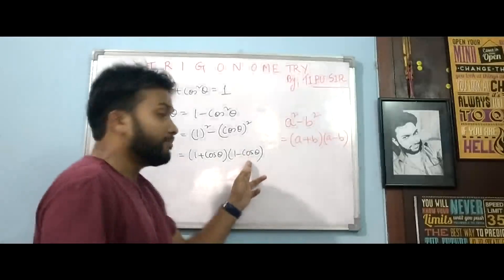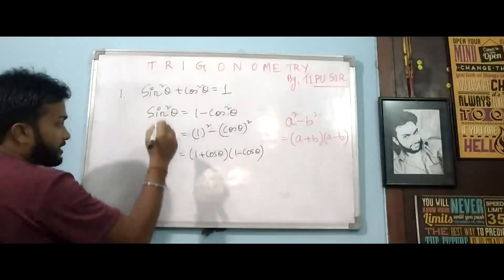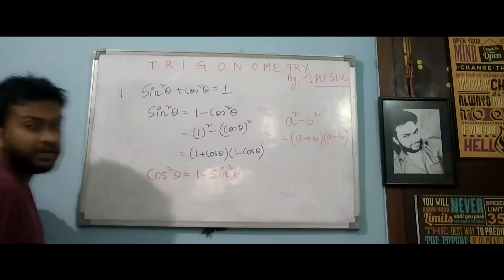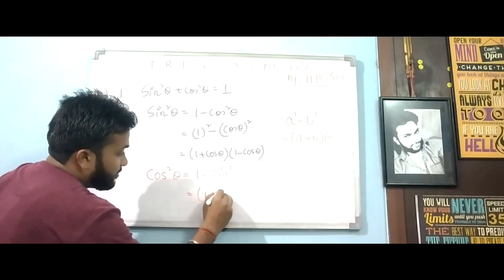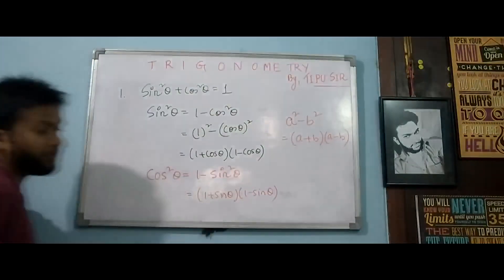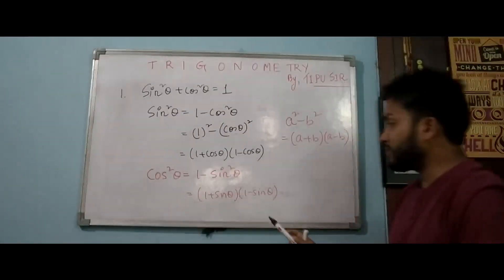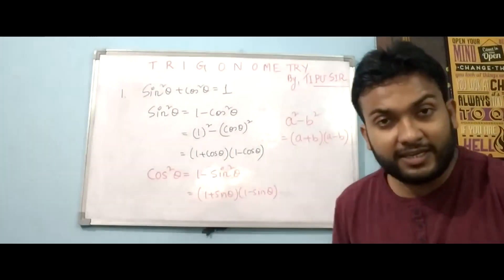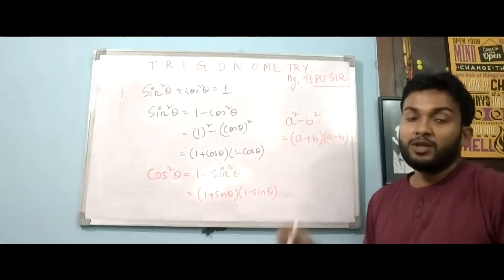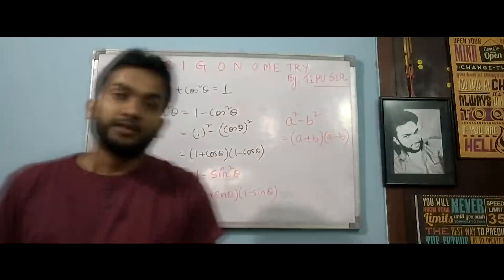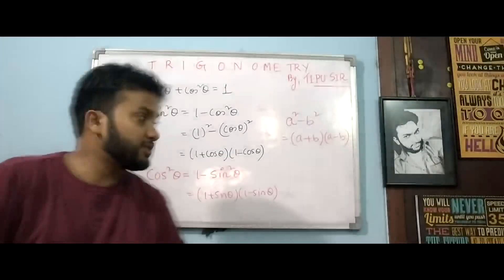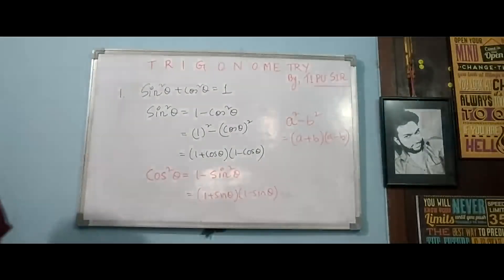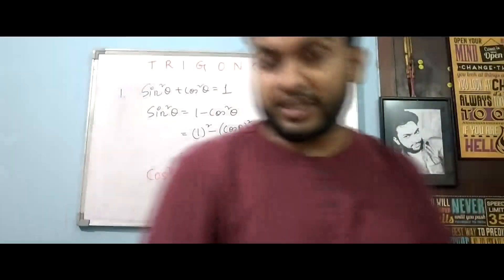We will multiply (1 minus cos theta). If we write this formula another way: cos square theta equals to 1 minus sin square theta, which we can write as (a+b)(a-b). This means that if we ever find 1 plus sin theta, we will multiply by 1 minus sin theta. And if we find 1 minus sin theta, we will multiply by 1 plus sin theta. This is a small, simple approach with which we can solve these sums.